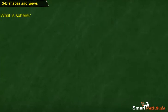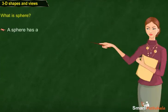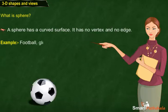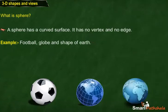What is a sphere? A sphere has a curved surface. It has no vertex and no edge. Examples include football, globe and the shape of Earth.